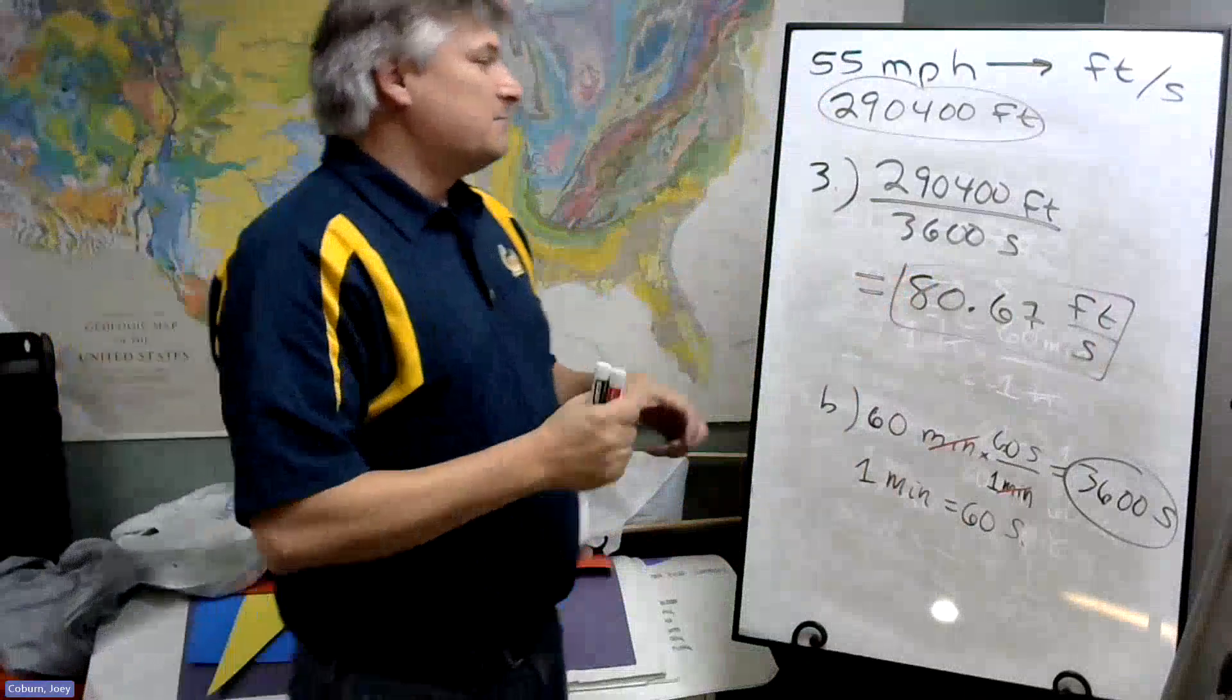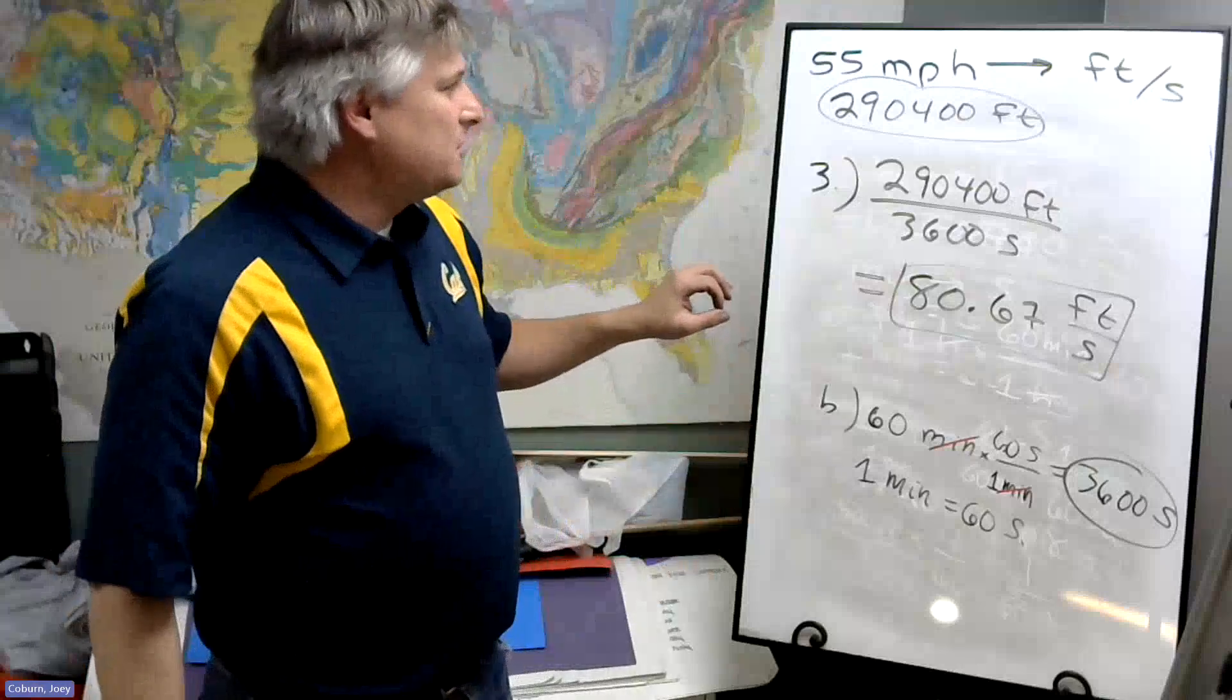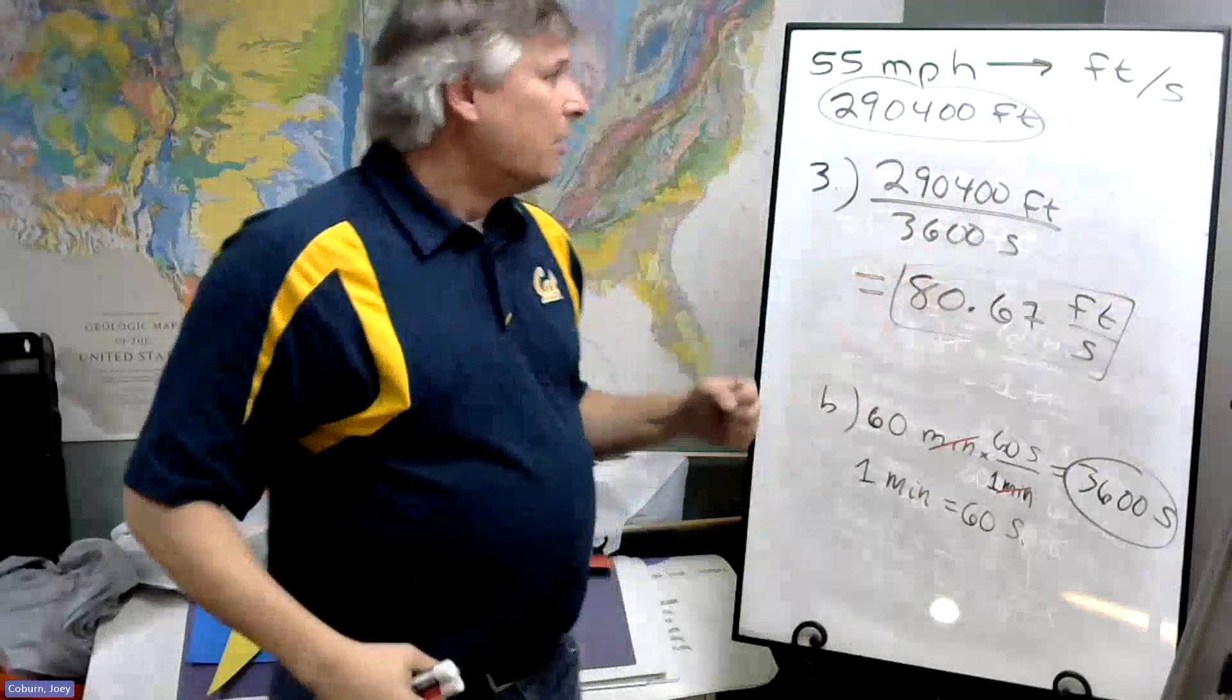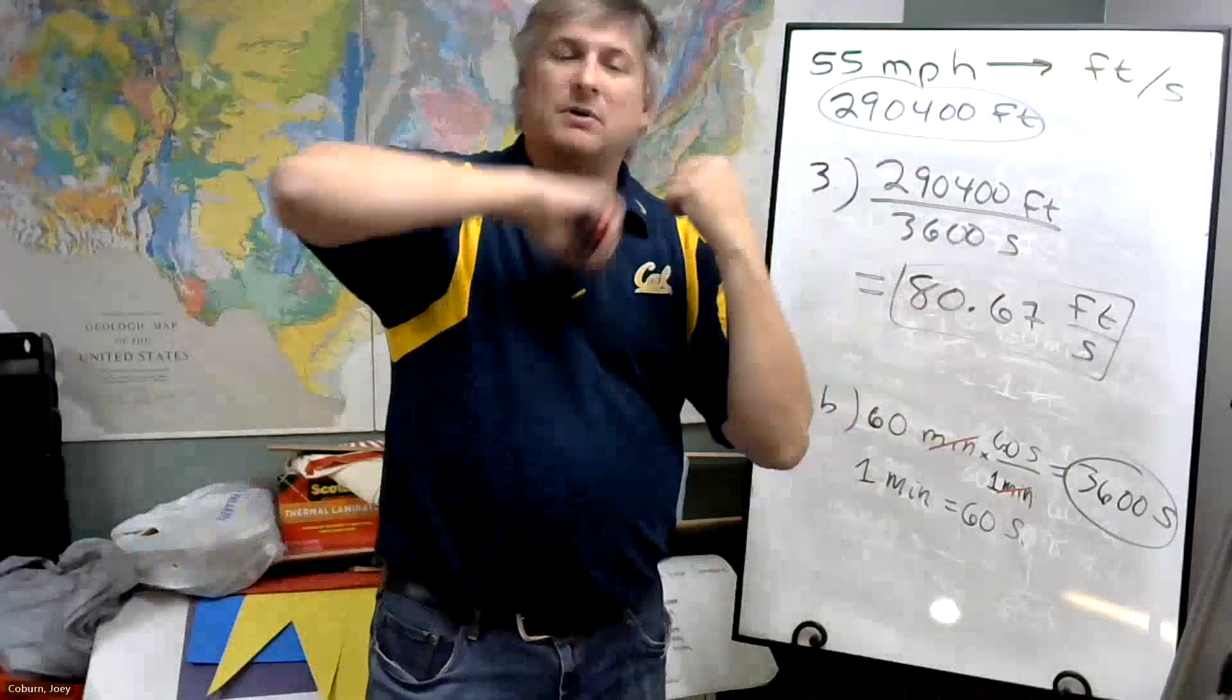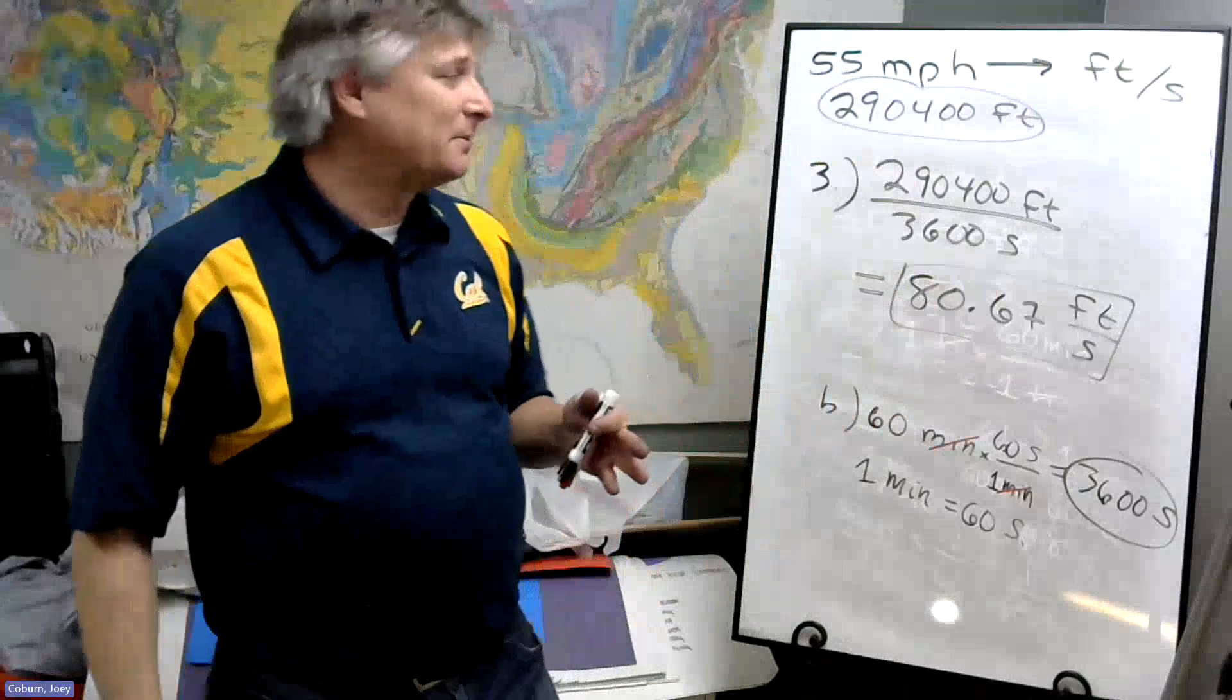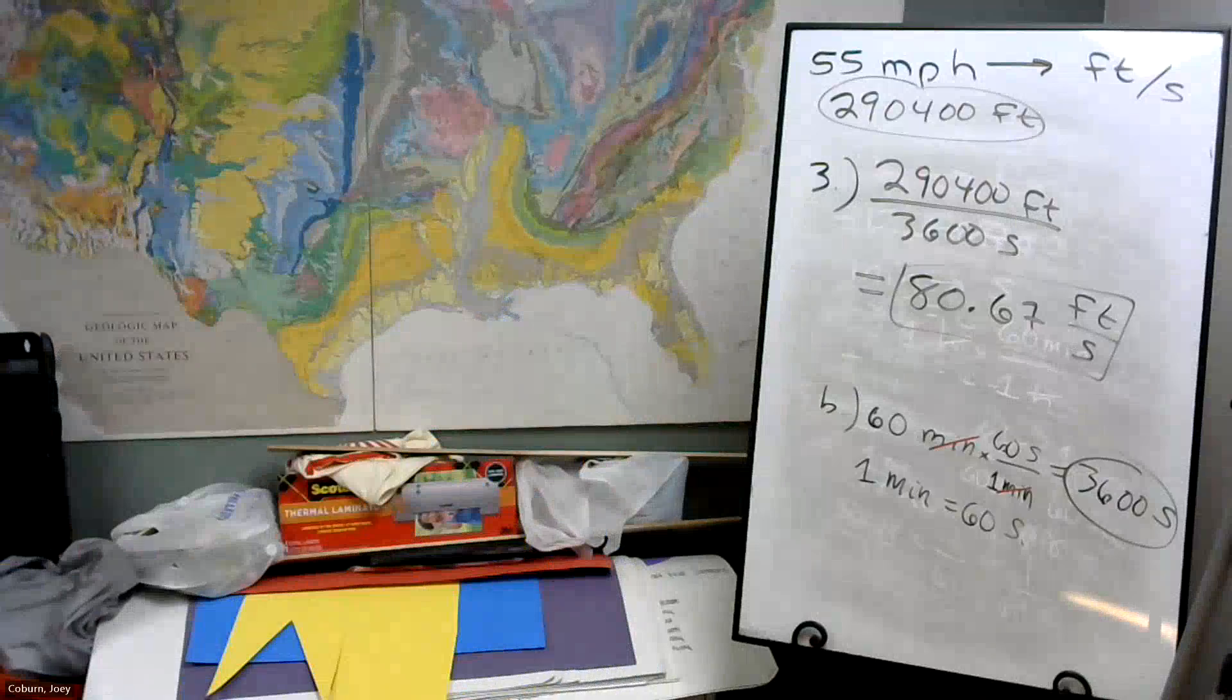So when you have multiple units you want to convert, you can do it using the link of ratios, the chain link of ratios, or you can convert one of those - say the miles to feet and then the hours to seconds - and then combine them at the end. So that's it. Any questions? Let me know.